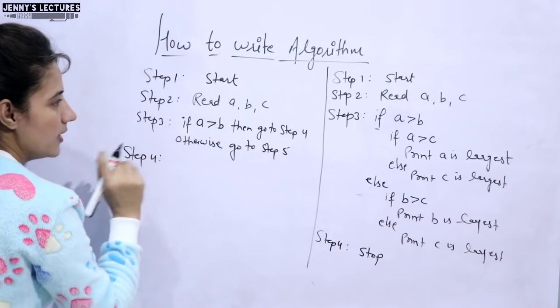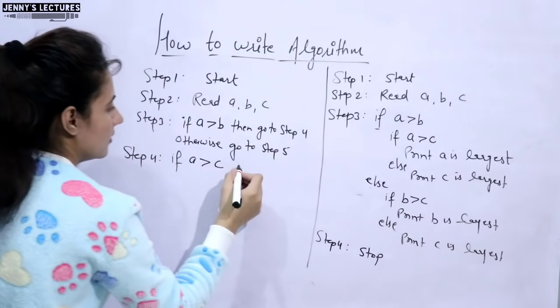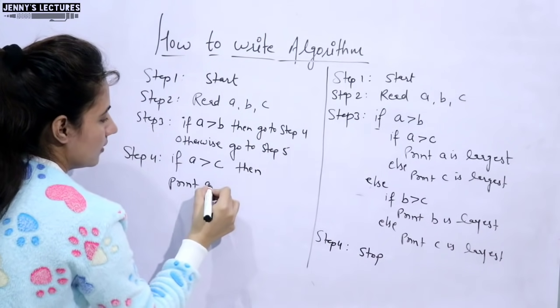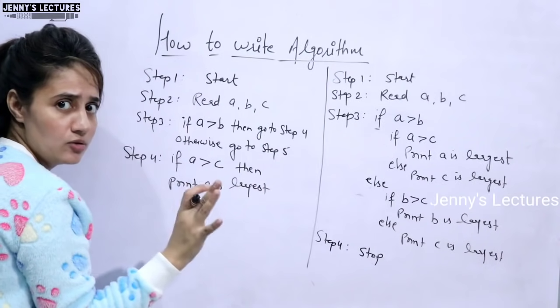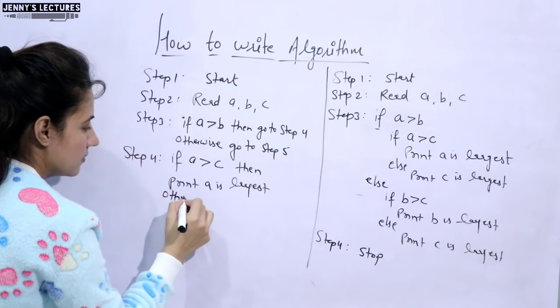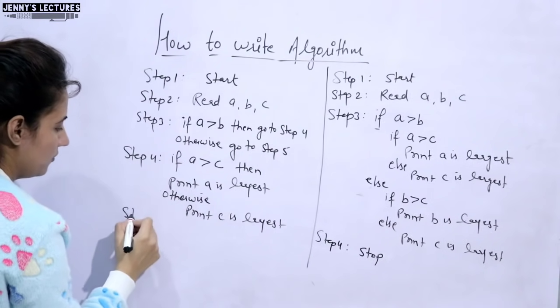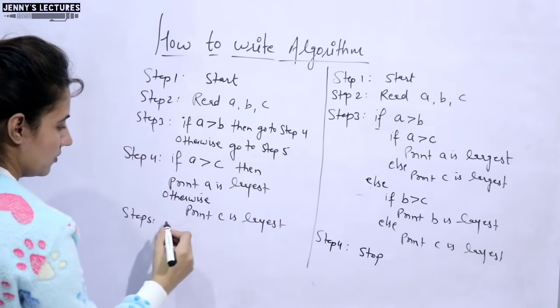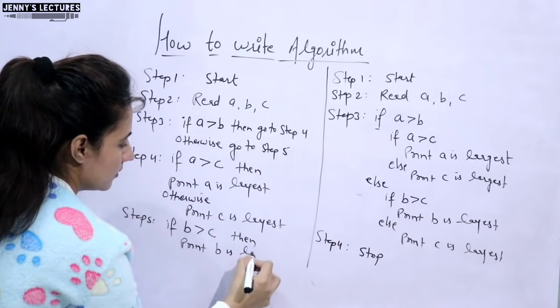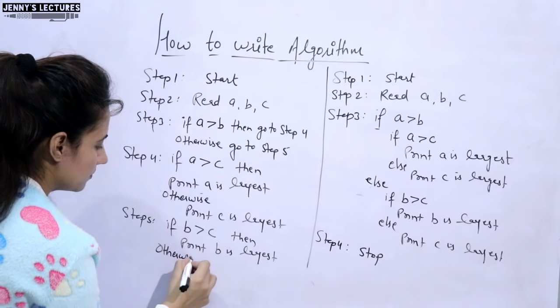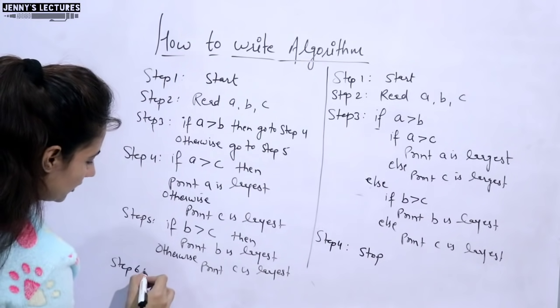Now step four is what? In step four I am writing this condition. I am checking this condition. If a is greater than c, then print a is largest. It's okay, you can write then, if you don't write then, then it's also fine. Okay, otherwise print c is largest. And step five is what? This condition I am writing in step five. If b greater than c, then print b is largest, otherwise print c is largest. And next step, step six, here you can write stop or end.